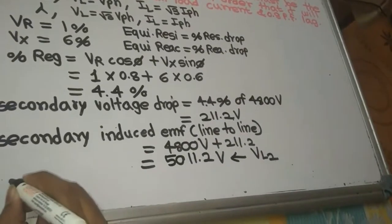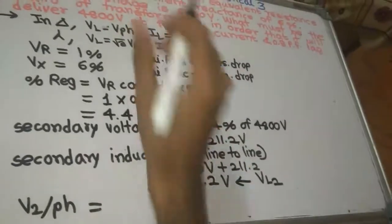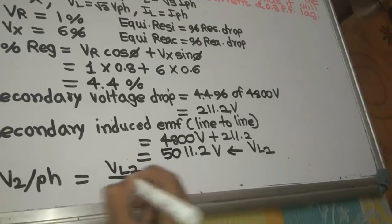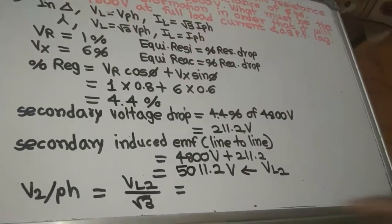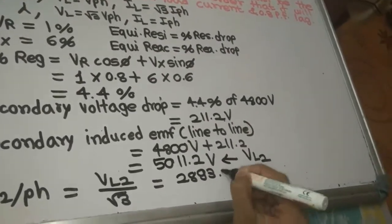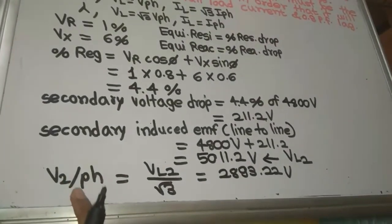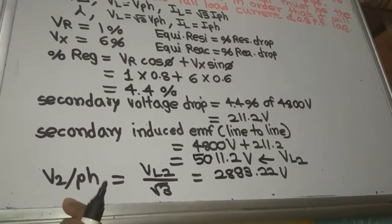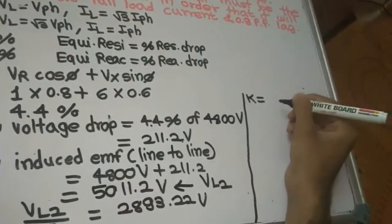Secondary induced EMF per phase: since the secondary is star-connected, V2_phase = VL2 / √3 = 5011.2 / √3 = 2893.22 volt. This is the secondary induced EMF per phase.